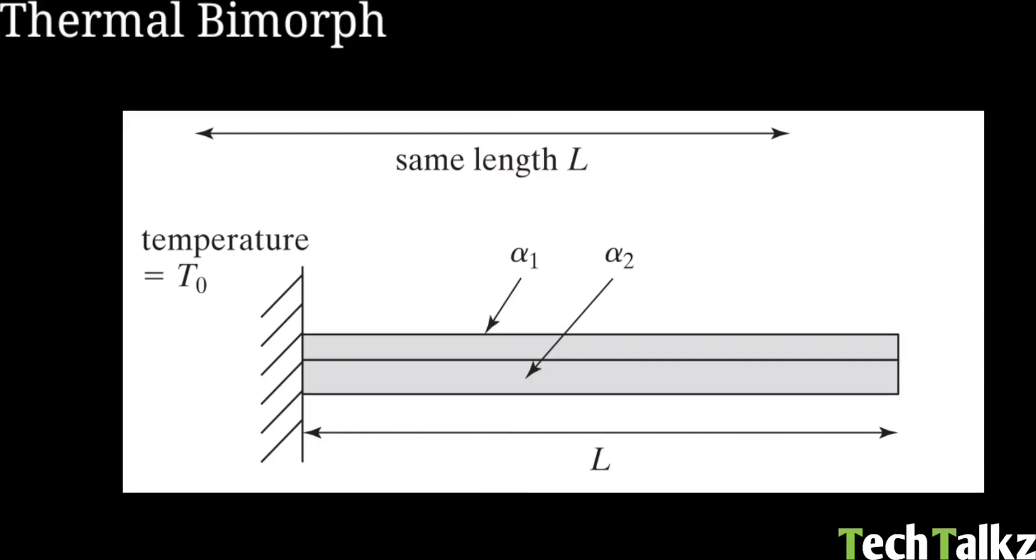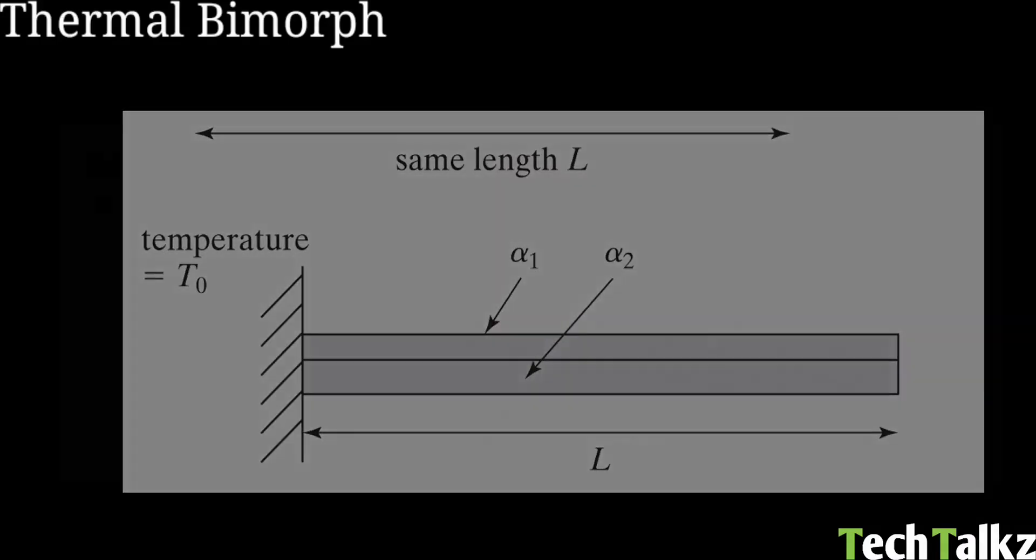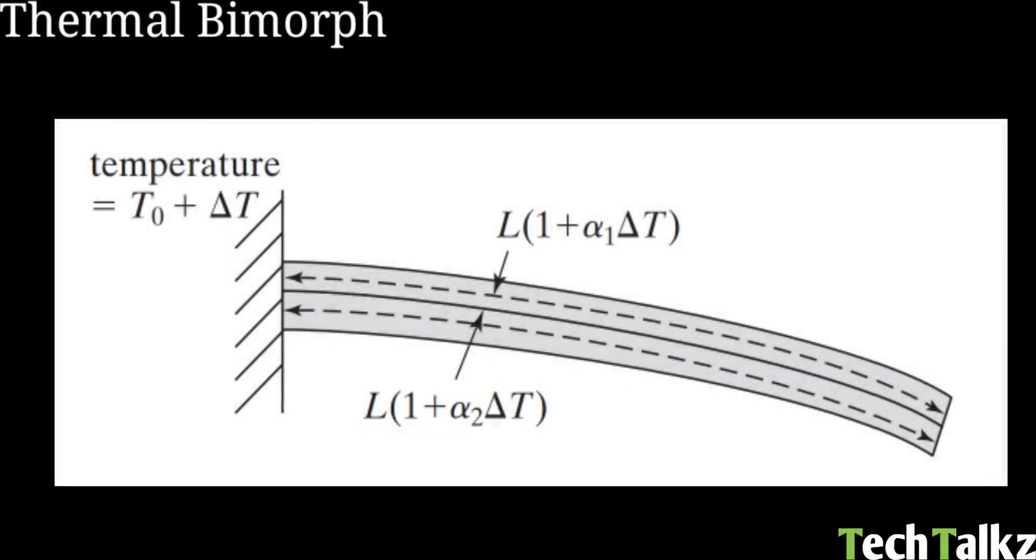Consider there is a uniform temperature rise of delta T. The increase in the total length will be equal because thermal expansion coefficients are alpha 1 and alpha 2. But alpha 1 is different, alpha 1 is greater than alpha 2. That is the basic working principle of a thermal bimorph. A thermal bimorph is also called as a bimetallic actuator.